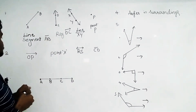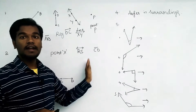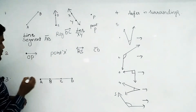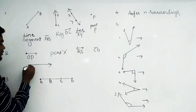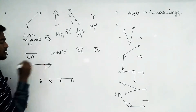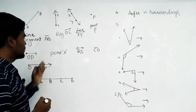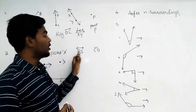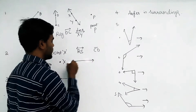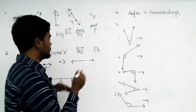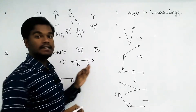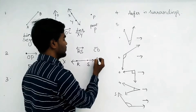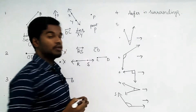For the second question, names are given and we need to draw them. For a ray, it starts at one point and goes somewhere, so you draw a starting point — for example, ray OP. A point X is simply a point. Line OR is a line, so both starting and ending arrow marks should be there. CD is a line segment — it has both a starting point and an ending point.